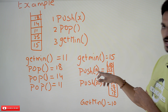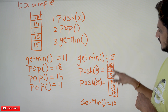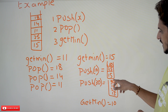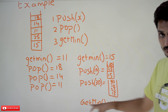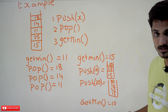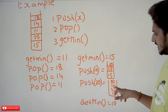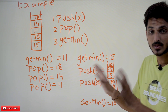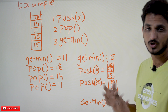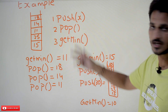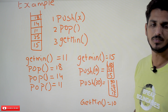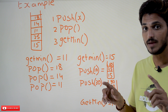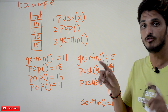If you push 10, the stack becomes 15, 25, 10. Push 30, the stack becomes 15, 25, 10, 30. And get min — what is the minimum element in the stack? 10. These are the operations we need to write in this example, but all the operations should be of time big O of one.